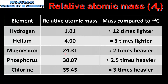Next is magnesium, with a Relative Atomic Mass of 24.31, which means that a magnesium atom is approximately 2 times heavier than an atom of carbon-12. Next is phosphorus, with a Relative Atomic Mass of 30.07, and is approximately 2.5 times heavier than an atom of carbon-12. And finally we have chlorine, with a Relative Atomic Mass of 35.45, which is approximately 3 times heavier than an atom of carbon-12.